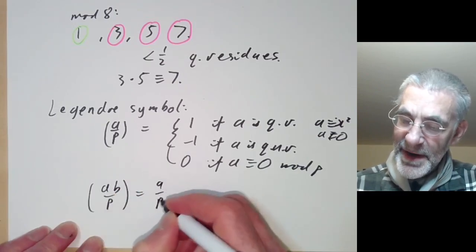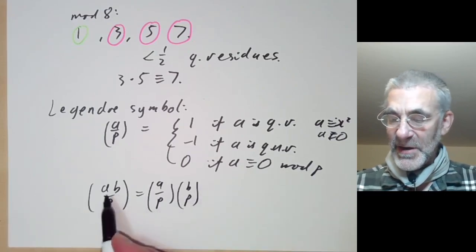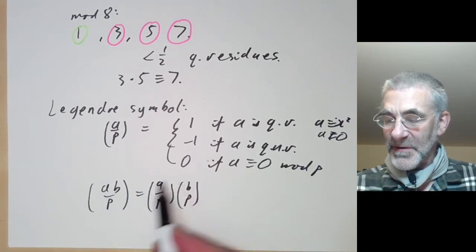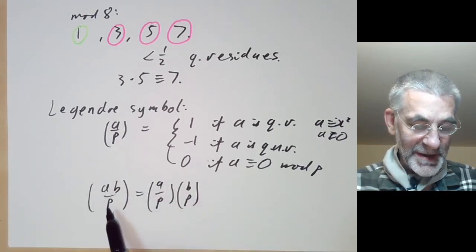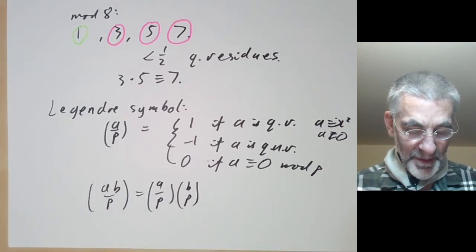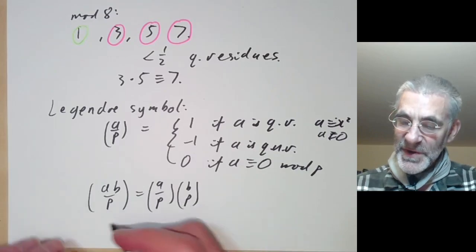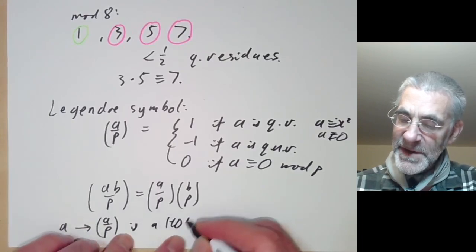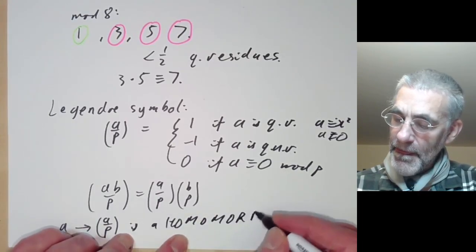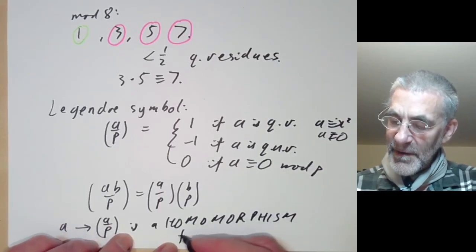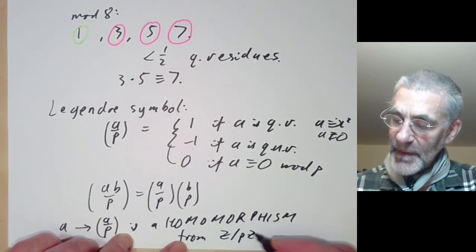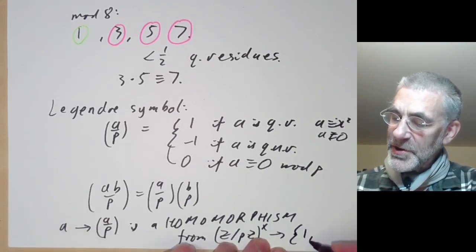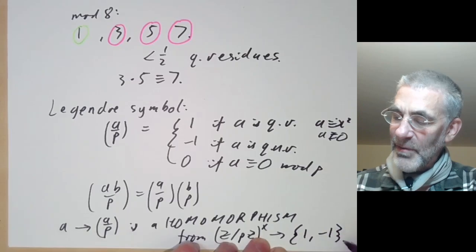(ab/p) equals (a/p) times (b/p). For instance, if a and b are both non-residues, these two factors are minus 1, so the product is 1, saying a times b is a quadratic residue. Another way of stating this, if you've done group theory, is that the map taking a to (a/p) is a homomorphism of groups from the group of elements co-prime to p modulo p, to the group of order 2 with elements 1 and minus 1.